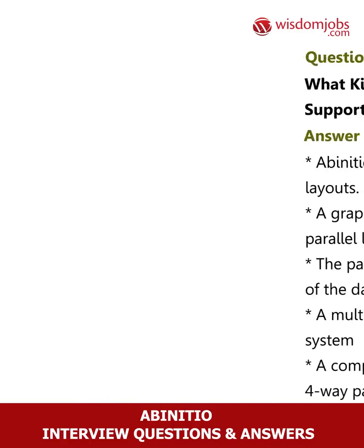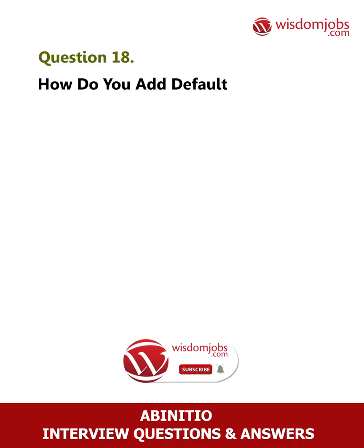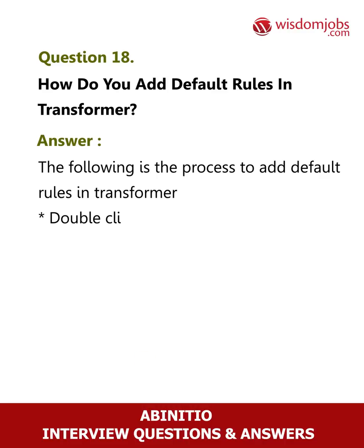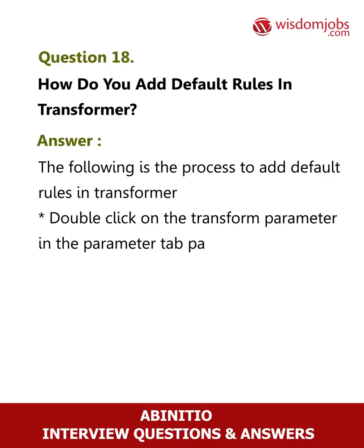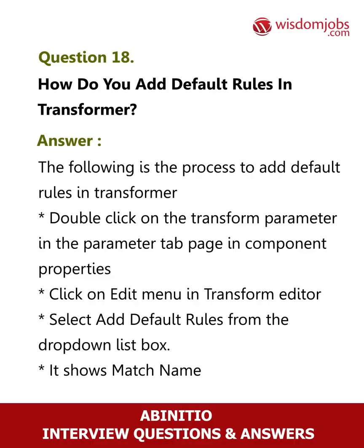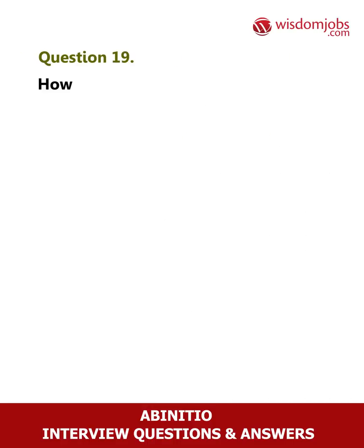Question 18: How do you add default rules in a transformer? Answer: The following is the process to add default rules in a transformer. Double-click on the transform parameter in the parameter tab page in component properties. Click on the edit menu in the transform editor. Select 'Add Default Rules' from the drop-down list box. It shows 'Match Names' and 'Wildcard' options — select either of them.